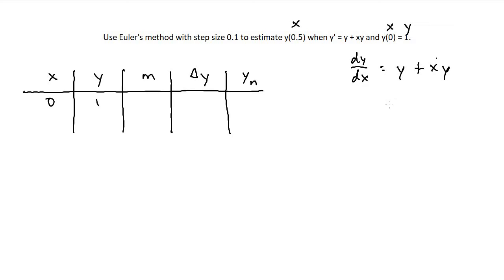If y is 1 and x is 0, then we get 1 plus 0 times 1 which is 0. So we get the slope of 1.